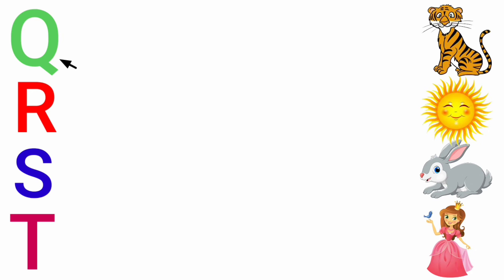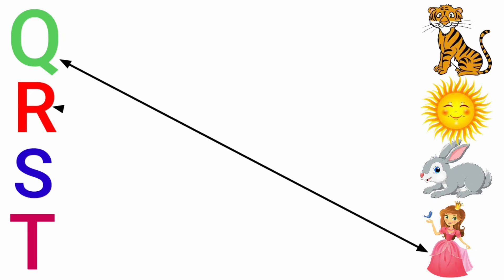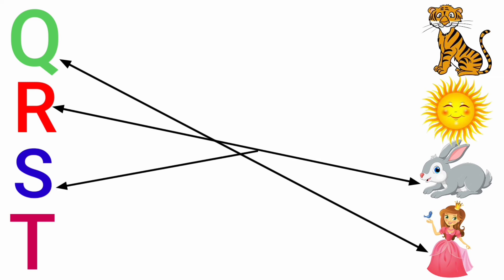Q for queen, R for rabbit, S for sun, T for tiger.